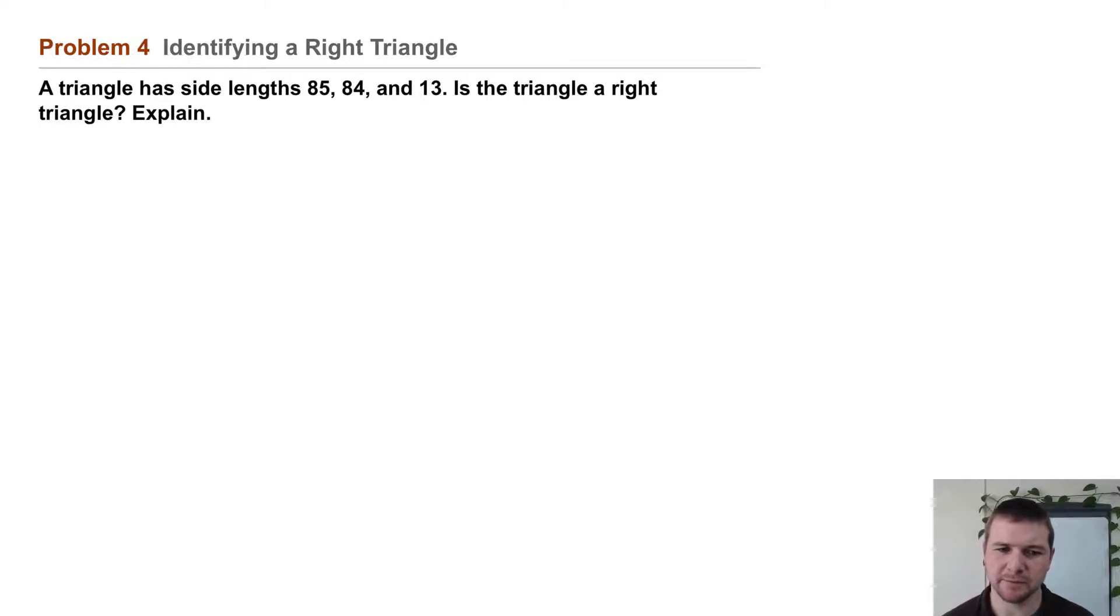We'll use the Pythagorean theorem to test these lengths. We'll substitute 13 for a, 84 for b, and reserve c for the longest side length, 85, because if this is indeed a right triangle, c will stand in for the hypotenuse, which is the longest side.